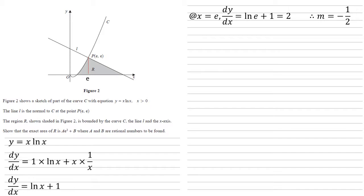So we've now got the gradient of our line L. We've got a point that it goes through, P, with coordinates e, e. So using our straight line equation, y minus y1 equals m times x minus x1, we get that y minus e equals minus a half times x minus e.